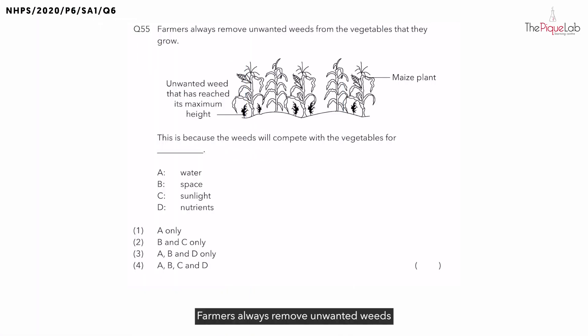Farmers always remove unwanted weeds from the vegetables that they grow. And why do you think they do that? Why do they want to remove these unwanted weeds?